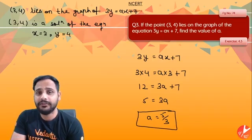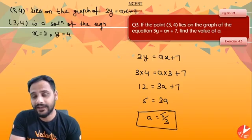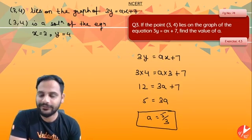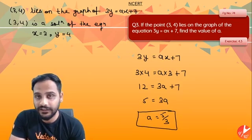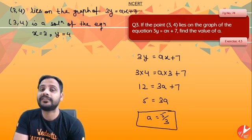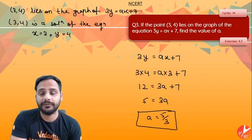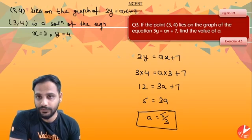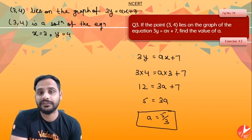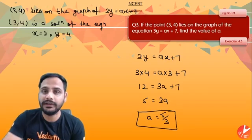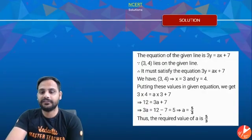So remember the concept here is: if a point lies on the graph of any equation or on the graph of any line, that point must satisfy that equation. So if 3 comma 4 lies on the graph of this equation, that means 3 comma 4 must be a solution.